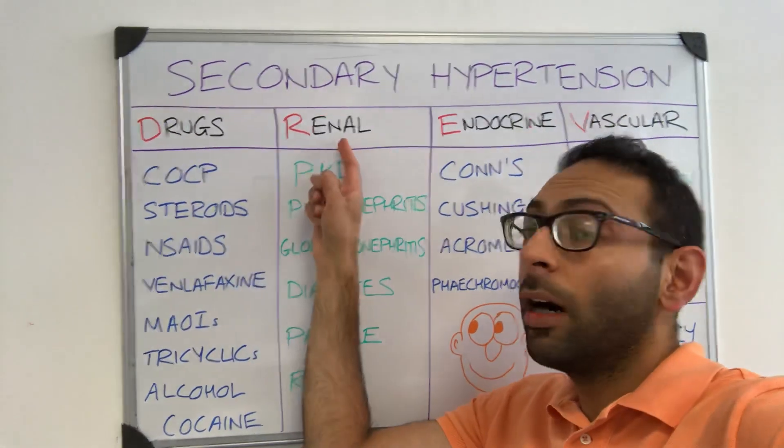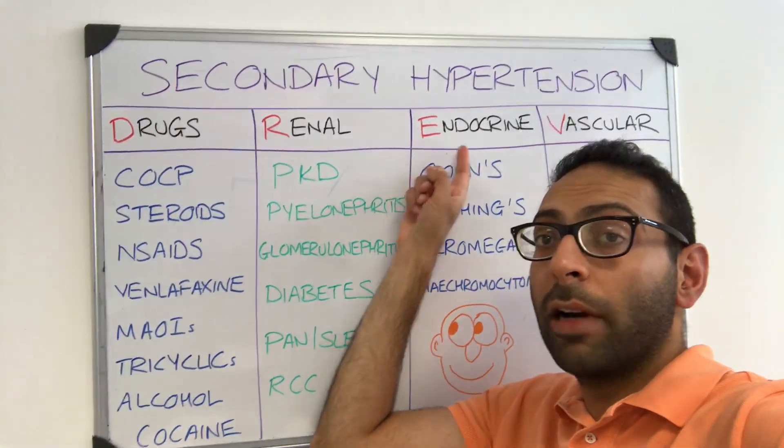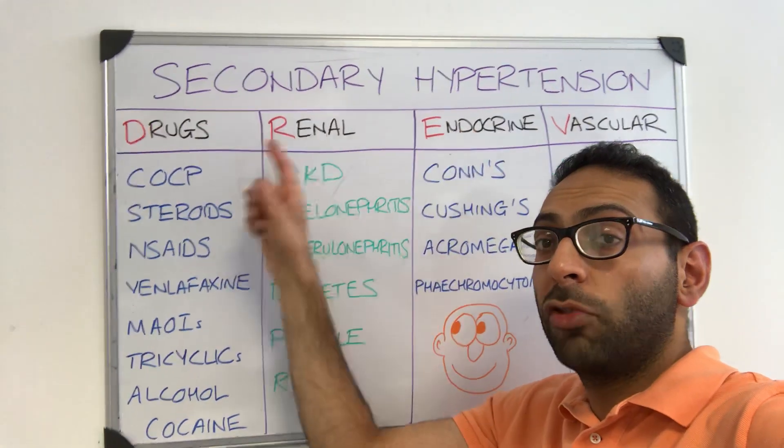D — drugs. R — renal. E — endocrine. And V — vascular. DREV. D-R-E-V.